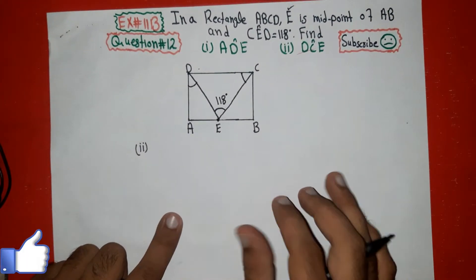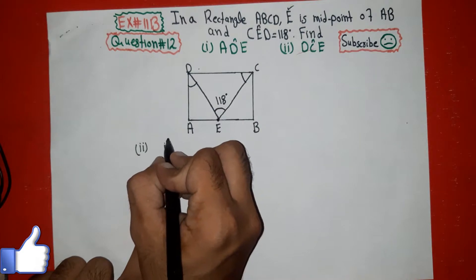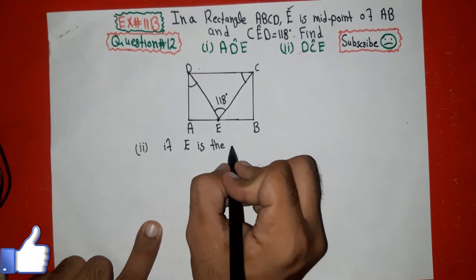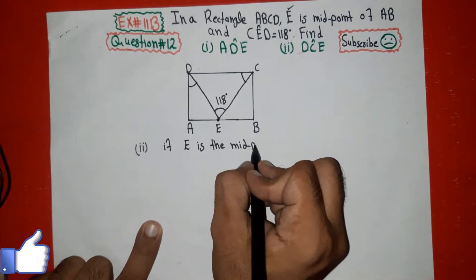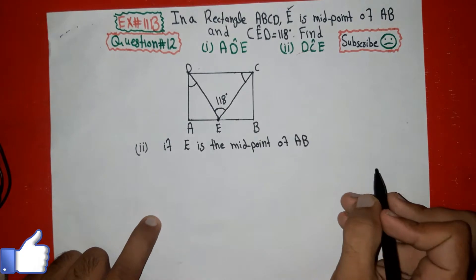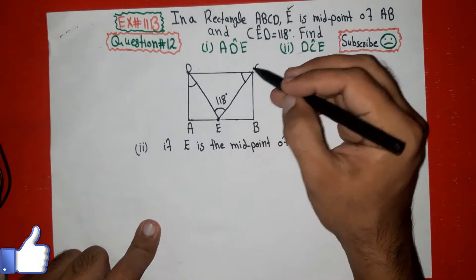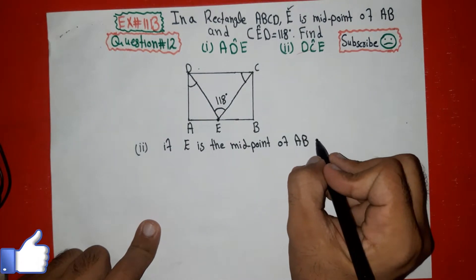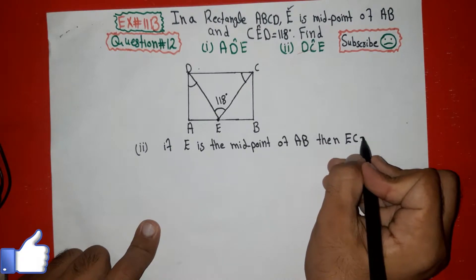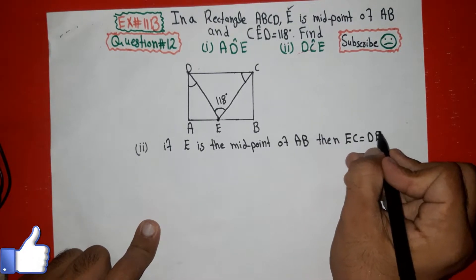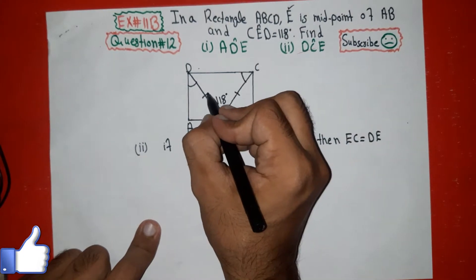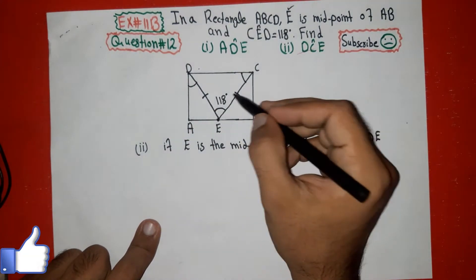Since E is the midpoint of AB, it means that the length EC equals ED. So EC equals DE — these two sides of the triangle are equal, as can be clearly seen.